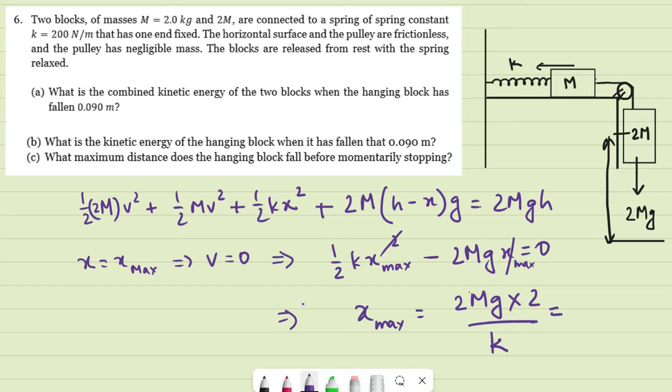So we have 4 times 2, so that's 8, 8 kg times 9.8 meter per second squared divided by 200 newton per meter. So once again, let me grab my calculator and plug these numbers in. And the calculator replies that it should be 0.392 meter.